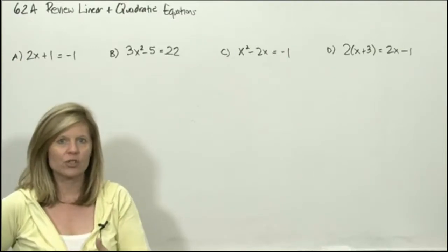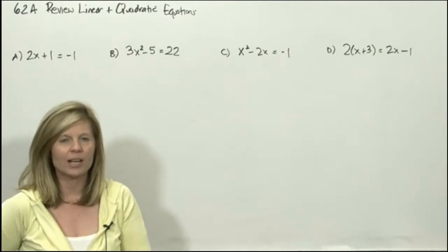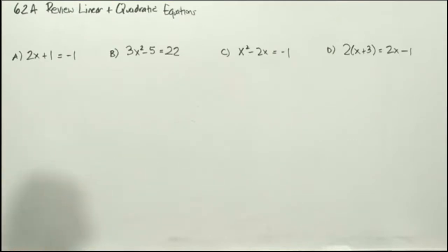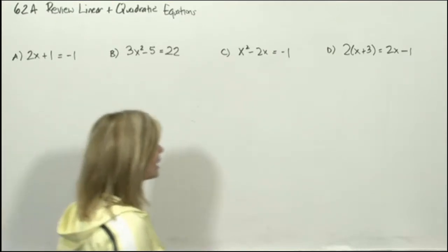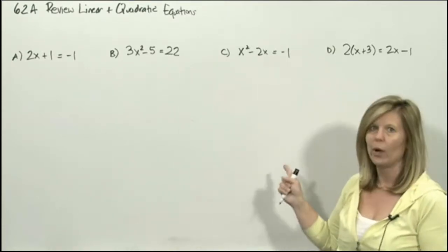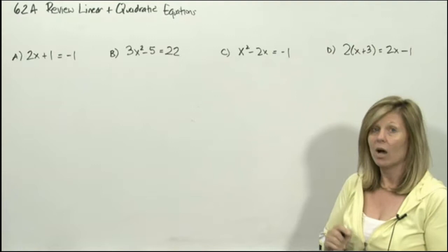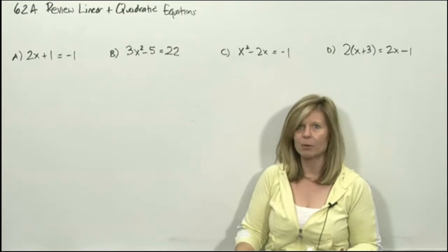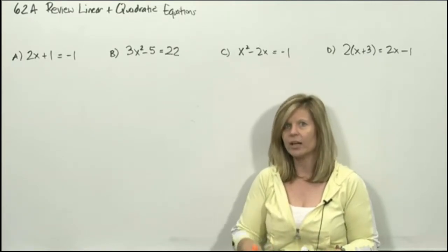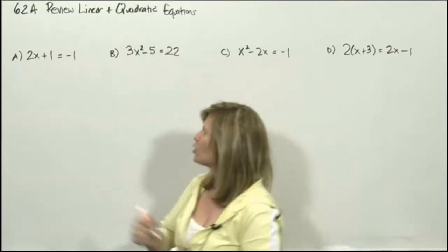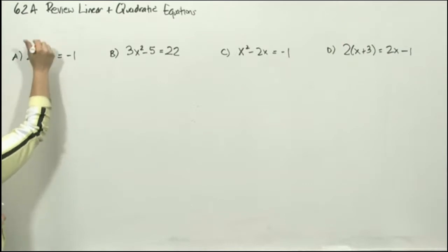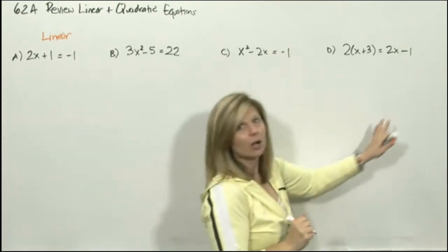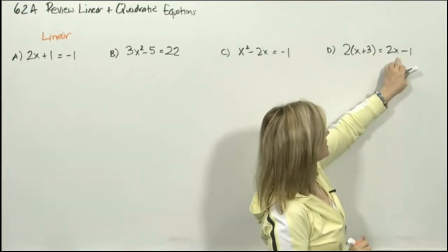When we solve equations, we want our x on the left side of the equation, and we want our number on the right. The first thing we need to refresh our memory on is the difference between a linear equation and a quadratic. Out of these four equations, which ones are linear? Linear means that the equation has a variable with an exponent of 1. The highest degree of the equation is 1. So the first equation is linear, and equation d is also linear.